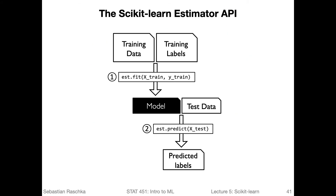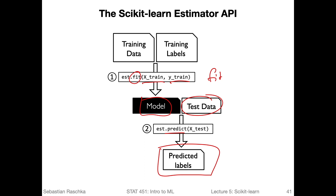Here's a flowchart outlining the scikit-learn estimator API workflow. After initializing an estimator, you call fit using the training data to fit the model. Once you have a fitted model, you can use a test dataset or any other new data with the same features as the training data to make predictions by calling predict and getting back the labels.